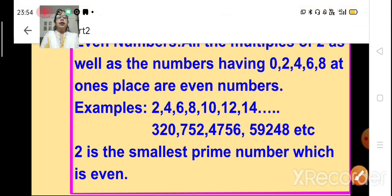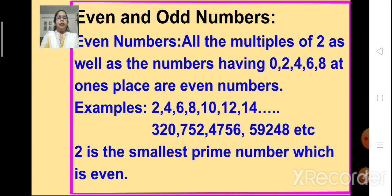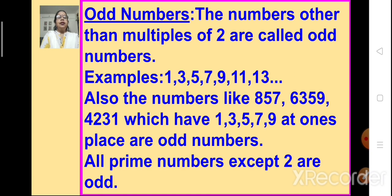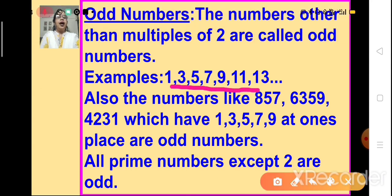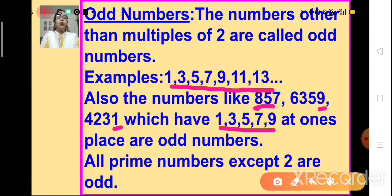Now, what are odd numbers? The numbers other than multiples of 2 are called odd numbers. These are 1, 3, 5, 7, 9, 11, 13, 15, 17, 19 and so on. Also, 3-, 4- and 5-digit numbers which have 1, 3, 5, 7 or 9 at the ones place are also odd numbers. For example, 857 has 7 at the ones place, 6359 has 9 at the ones place, and 4231 has 1 at the ones place. So all these numbers which have 1, 3, 5, 7 or 9 at their ones place are called odd numbers.